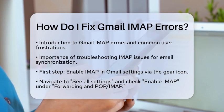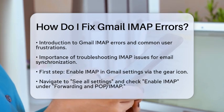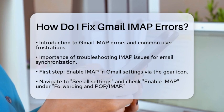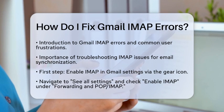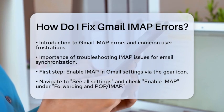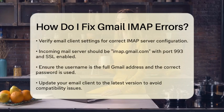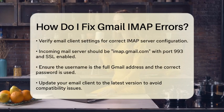First, ensure that IMAP is enabled in your Gmail settings. Open Gmail in a web browser, click on the gear icon for settings, and navigate to the See All Settings option. Under the Forwarding and POP/IMAP tab, check that the IMAP access is set to Enable IMAP. If it is not, make the change and save your settings.